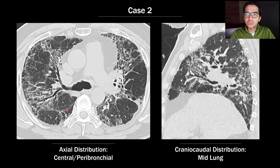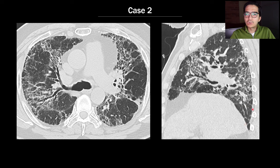In the second case, axial and sagittal images show fibrosis that is central or peribronchial in distribution, with a mid-lung predominant craniocaudal distribution — in fact, the bases are spared. This means the patient has an alternative diagnosis. This patient was diagnosed with chronic hypersensitivity pneumonitis, and had moderate to extensive expiratory air trapping on expiratory images.